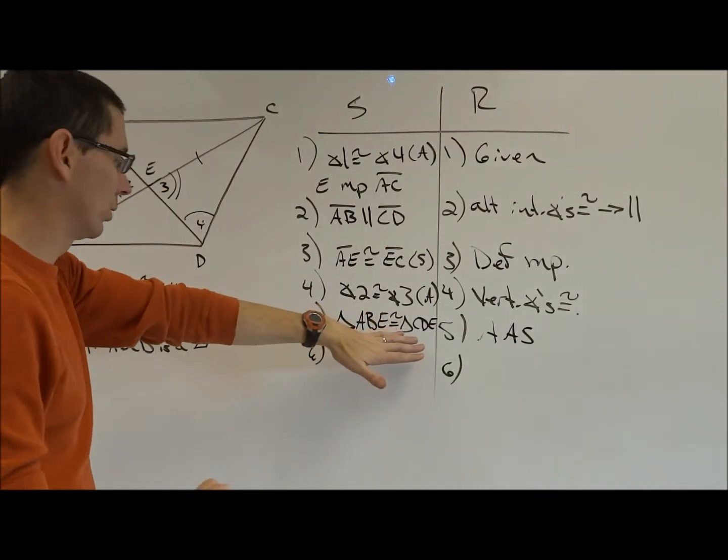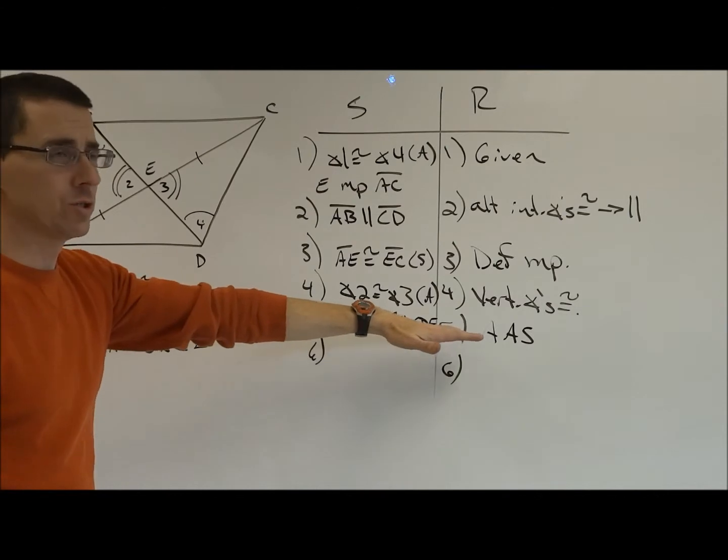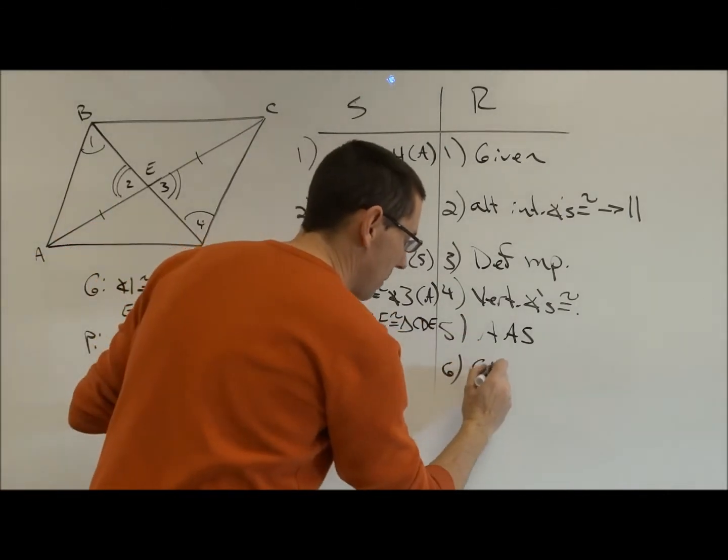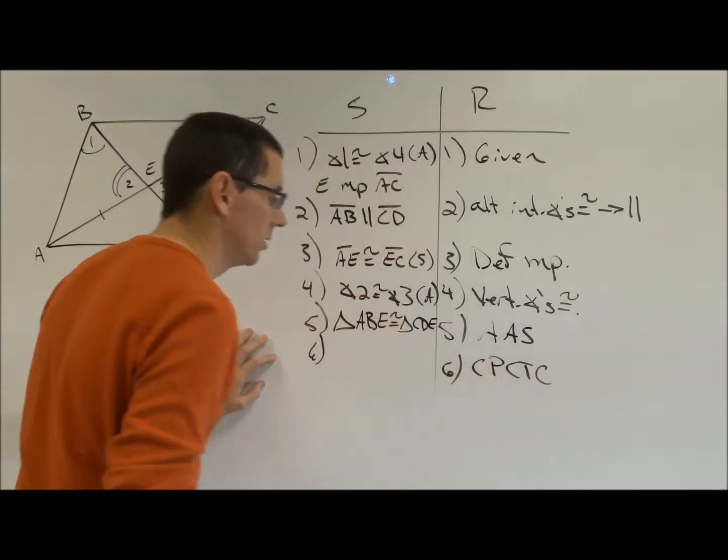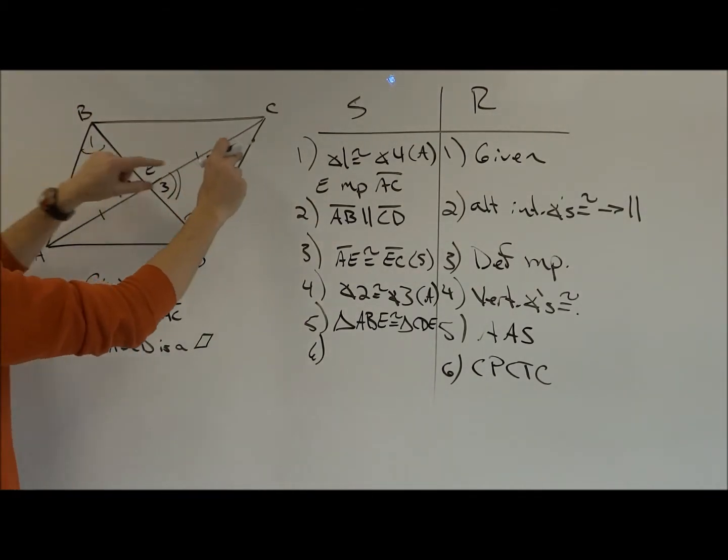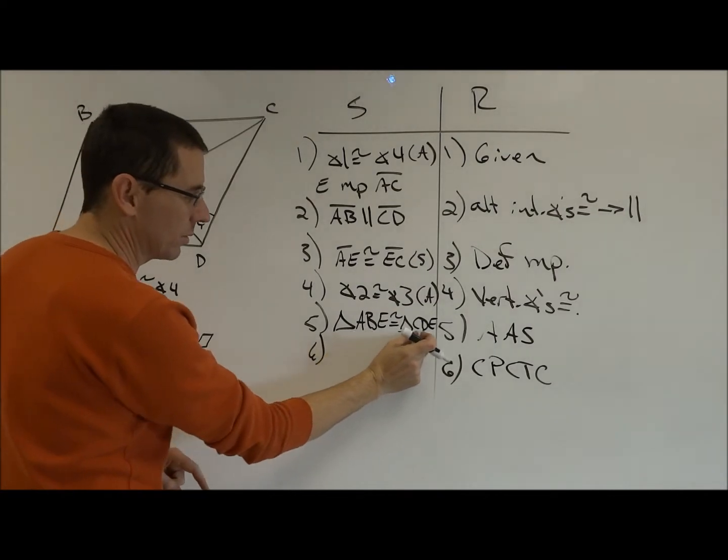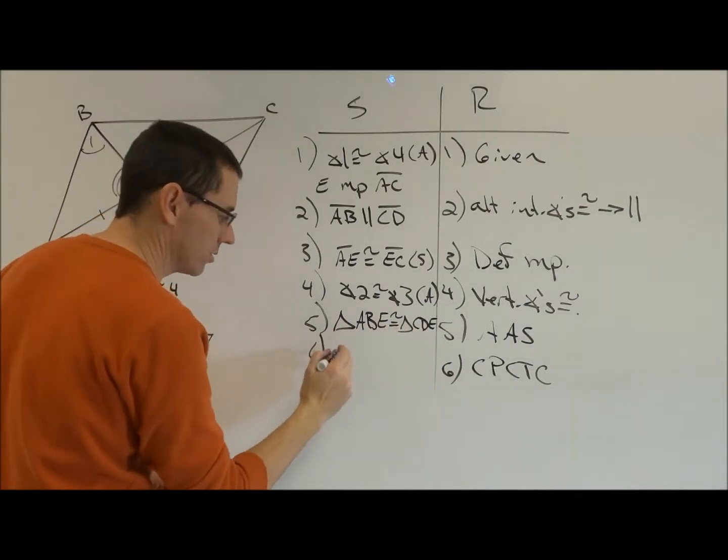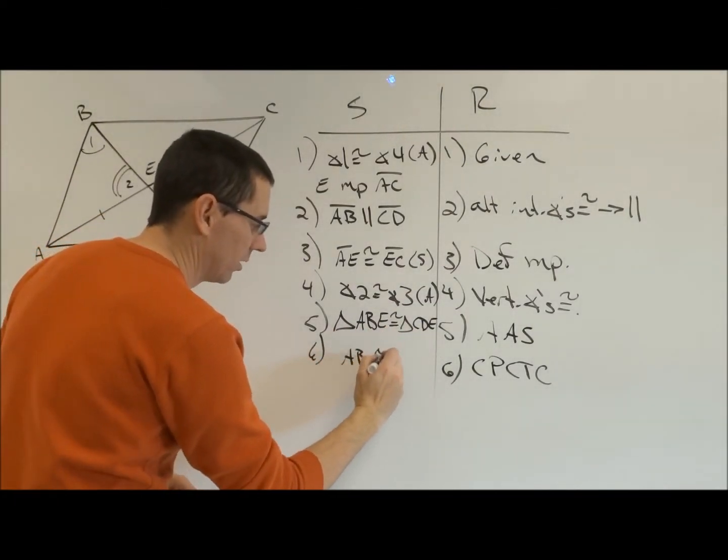So now, congruent triangles. What have we always been using right after congruent triangles? CPCTC. What am I going to use CPCTC for? Segment AB and segment, look at segment AB and segment CD. They correspond with one another so they have to be congruent.